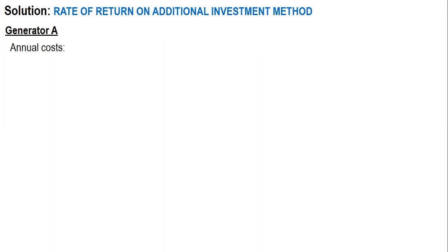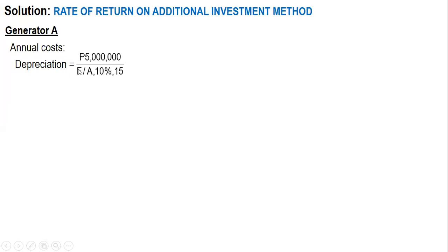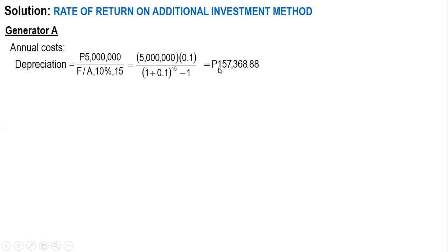For Generator A, we start with depreciation. The method used here is the sinking fund method. Since the salvage value is zero, we only have first cost over the factor (F/A, i%, n). The formula is: first cost times i divided by (1 + i)^n minus 1, with a useful life of 15 years. The depreciation cost comes out to 157,368.88 pesos.